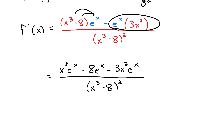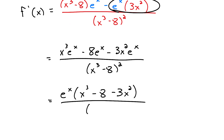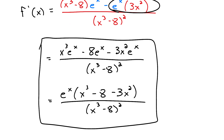You could leave the answer like that, or factor out an e to the x, giving e to the x times the quantity x cubed minus 8 minus 3x squared, all over x cubed minus 8, quantity squared. Either form is fine — factoring is optional, but it can be helpful if you need to work with the derivative afterward. Practicing the quotient rule with homework problems is really important, since it's a rule we'll come back to often throughout the rest of this course.